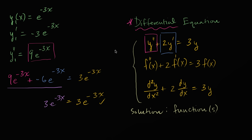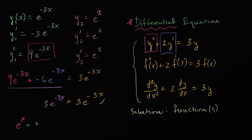But it is not the only solution. For example, y₂ = e^x is also a solution to this differential equation. I encourage you to pause the video and verify. The first derivative of e^x is e^x, and — one of the profound things about the exponential function — the second derivative is also e^x. So substituting in: the second derivative e^x plus two times the first derivative 2e^x is equal to 3e^x, which is indeed three times y₂. So y₂ is also a solution to this differential equation.